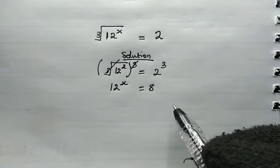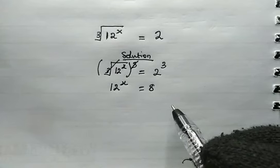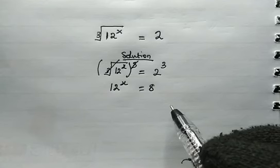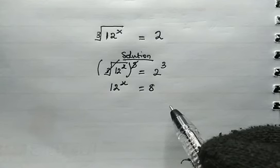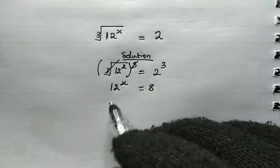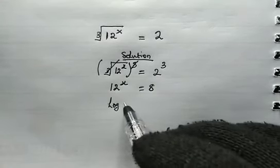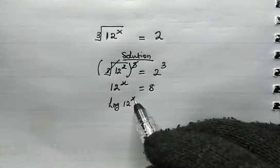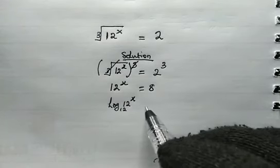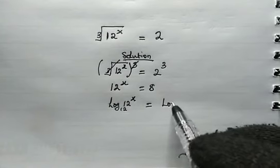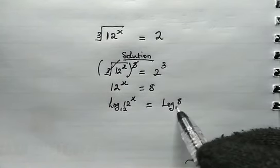From here we're going to make use of logarithms. We're going to take the log of both sides, but the log must be in base 12. So here we have the log of 12 to the power x, to the base 12. This is equal to the log of 8 to the base 12.